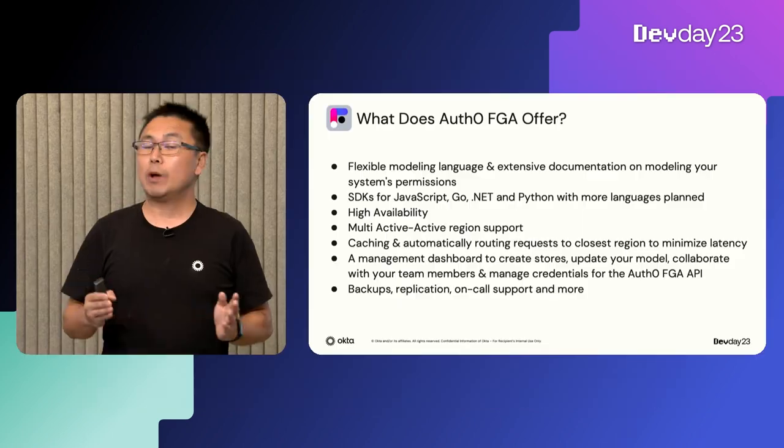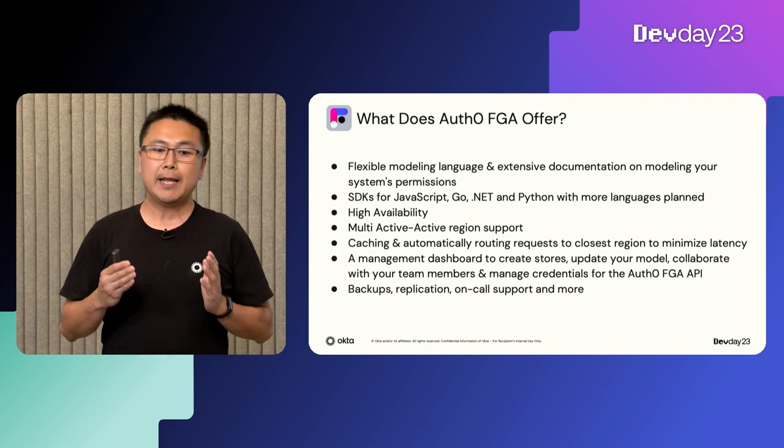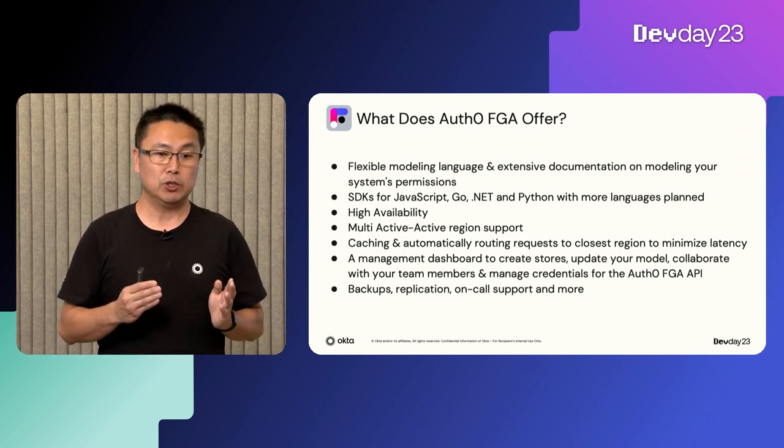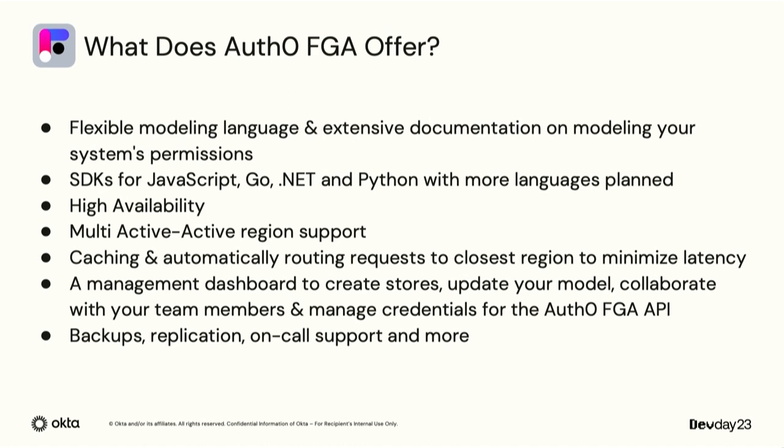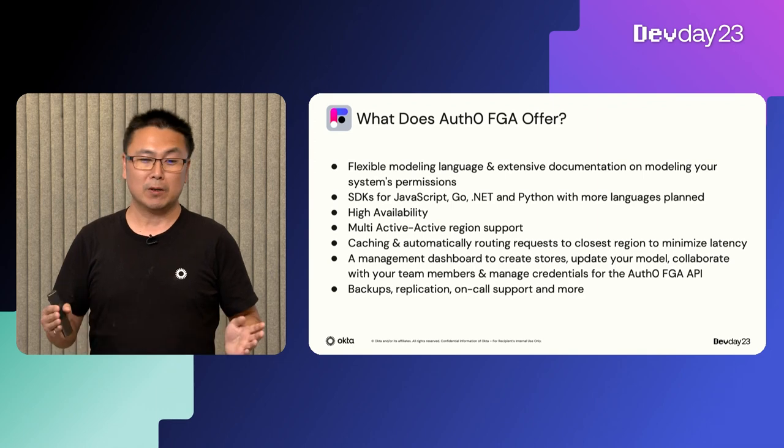Auth0 FGA provides a flexible modeling language with extensive documentation. It has SDKs for JavaScript, Go, .NET, and Python, with more languages planned. It is highly available with multi-active region support, and its caching infrastructure and automatic routing to the closest region minimizes latency. It has a management dashboard to create stores, update your model, collaborate with team members, and manage credentials. It also includes backup, replication, on-call support, and more.